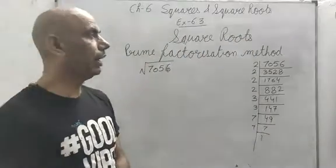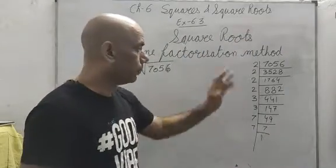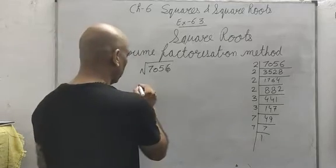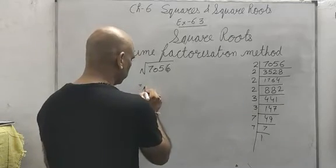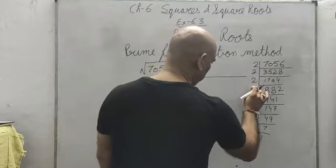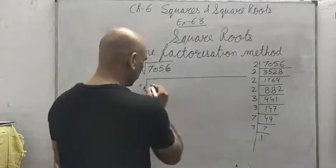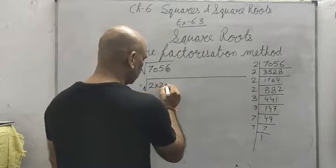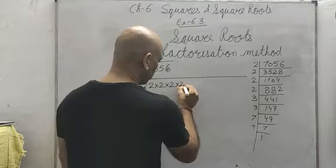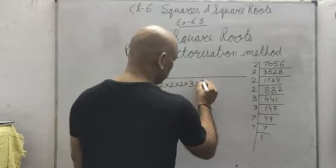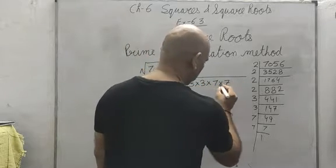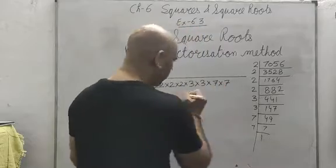So I got the prime factors of 7056. Now, once the prime factors are with me, I count: 2 appears 4 times, 3 appears 2 times, and 7 appears 2 times. What will I do next?